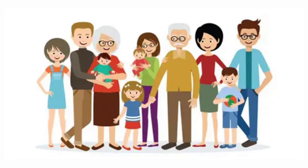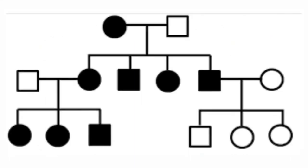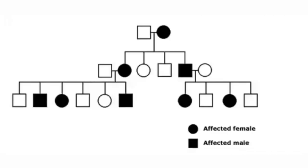Looking at a pedigree example: in a non-consanguineous marriage, an affected female has all affected children. In the next generation, an affected female with a normal male again has all affected children. Since disease spreads only through females to all children, this is a mitochondrial inheritance pattern. In another pedigree, there is no skipping of generation (dominant trait), and a male transmits disease to both males and females — confirming autosomal dominant inheritance.